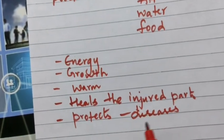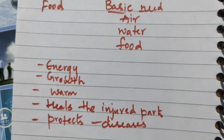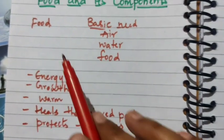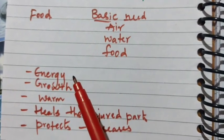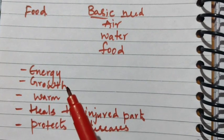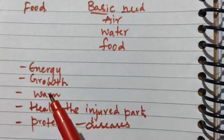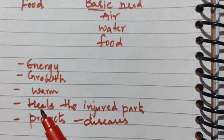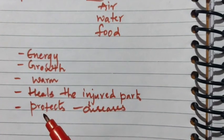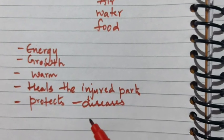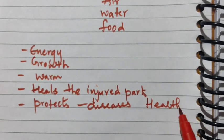To be healthy, we have to eat food. Food protects us from diseases and keeps us healthy. So food provides energy, supports growth, keeps the body warm, heals injured parts, and protects us from diseases.